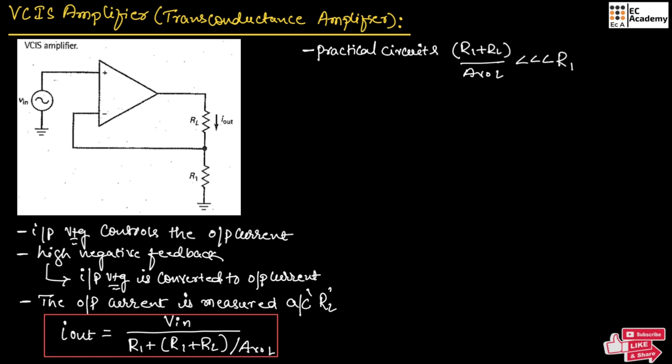Therefore, the expression can be simplified as Iout equals Vin divided by R1. From this formula, we can understand that output current depends upon resistor R1 as well as the input voltage.